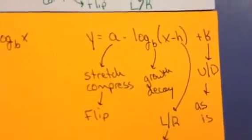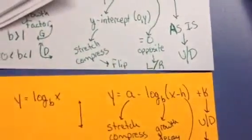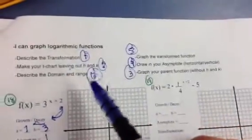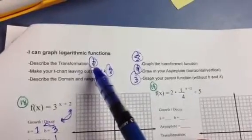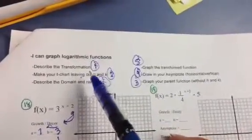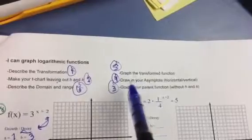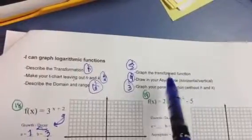How do you remember the difference between the walls? This one has a vertical wall, and the way I remember is because an L goes like that. On the test, you're going to be expected to describe the transformation in order, make your T-chart, leave out H and K, graph your parent function without H and K, draw on your asymptote or wall, and don't forget to graph your transformed function — those are the ones for describing domain and range.